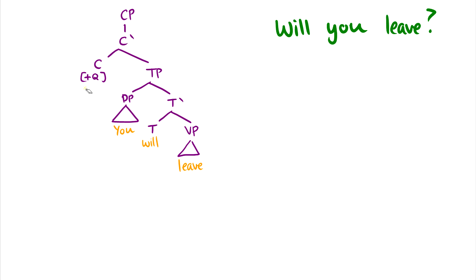And what happens when C has plus Q under it? Well, what it's saying is that it's asking for something. It's asking for T to move up to C. So when C has this plus Q in here, it's saying, look, this is not a valid question unless whatever is in T moves up to C. So we end up getting rid of 'will' in T, and 'will' moves up to C. And now this is the question, 'will you leave?' And that's all there is to it.